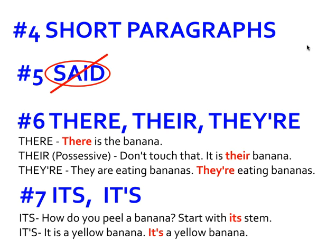Number four: short paragraphs. Some of you still have gigantic paragraphs. Revise so that paragraphs are at most five to six sentences; most of your paragraphs should be two to three sentences. Number five: think about how many times you use 'said' for dialogue — 'the woman said,' 'I said,' 'she said.' Can you change 'said' to something else? If you Google 'other words for said,' you'll find a whole list: screamed, yelled, stated, said frightenedly. You can even add an adverb to that.